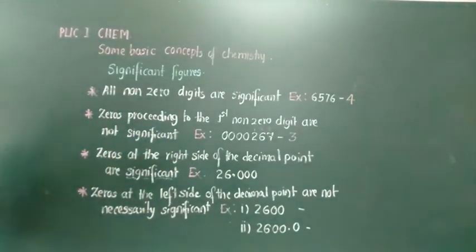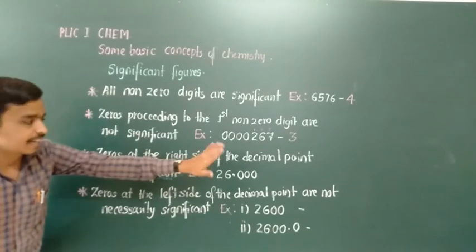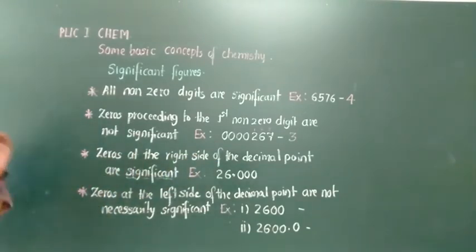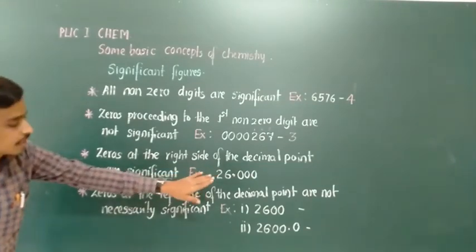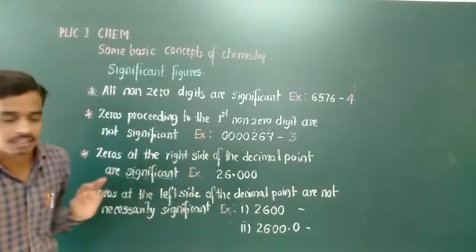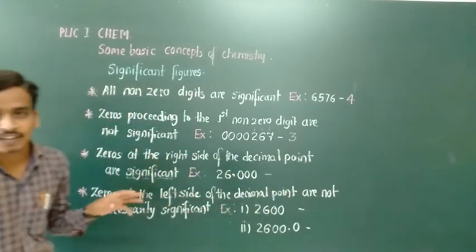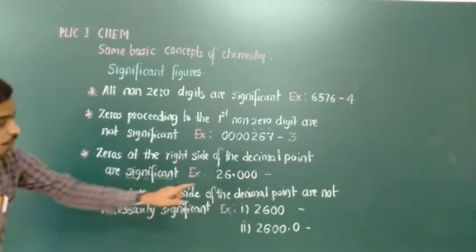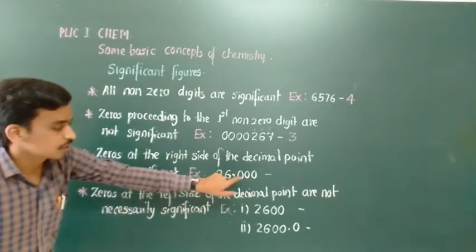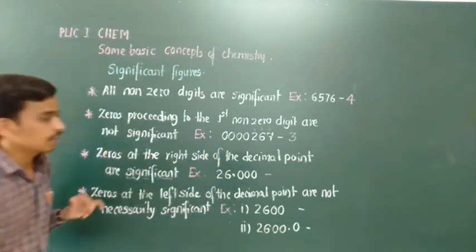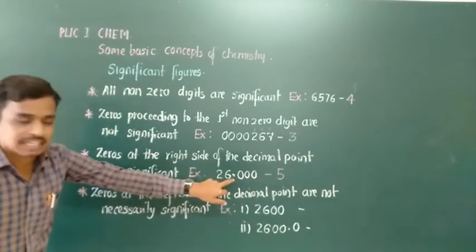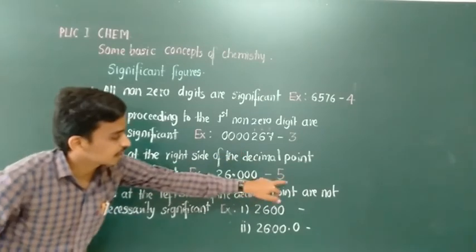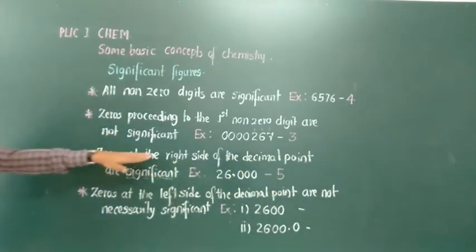The third rule is quite important: zeros at the right-hand side end of the decimal point are significant. So for the number 26.300, the total number of significant digits is 5, not just the non-zero digits. The zeros to the right of the decimal point become significant, so the total significant digits here is 5.